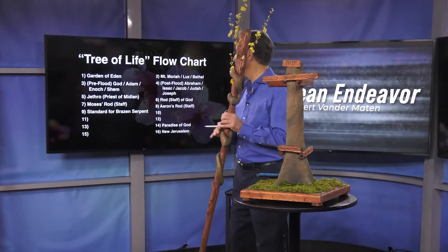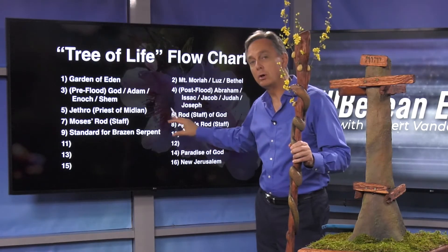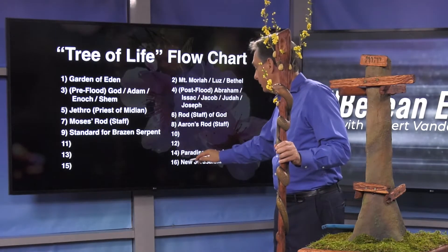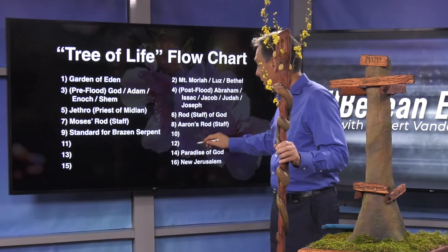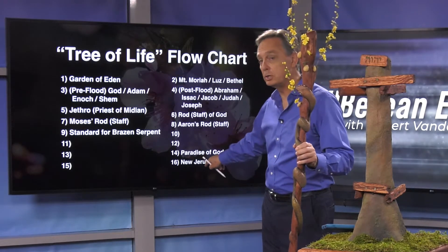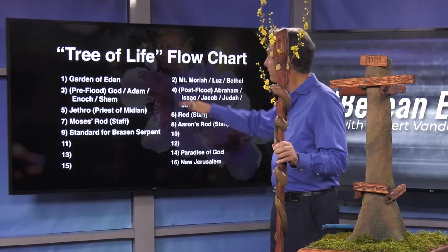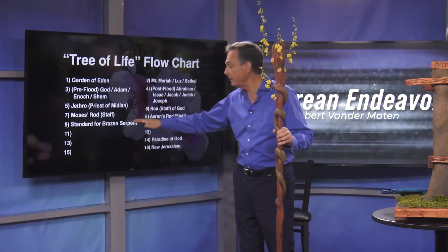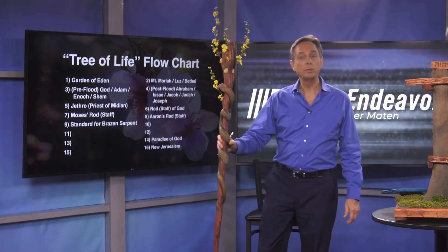This is where we left off in the last program. We set up this Tree of Life flow chart and we're filling in the blanks as we go. We're going to get to the New Jerusalem, Paradise of God — we know it was here, we know it is here, and it will be here at the end in Revelation 22. How does it get from the Garden of Eden all the way to the New Jerusalem? The last blank we filled in was the standard for the brazen serpent.